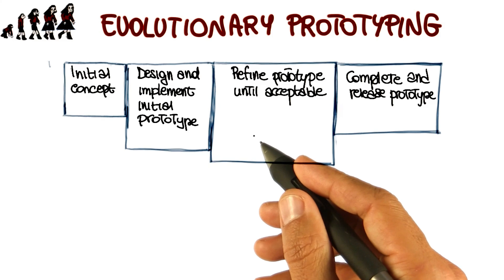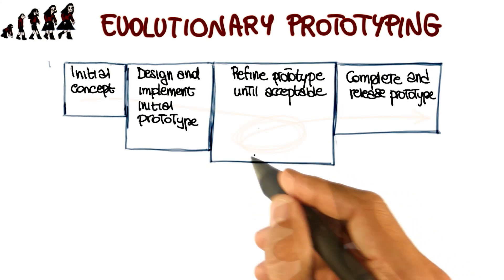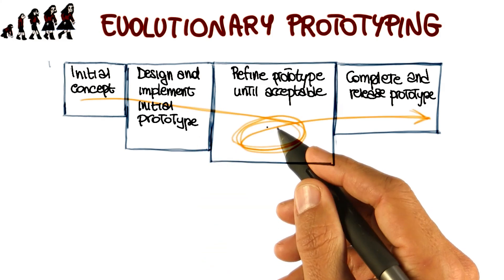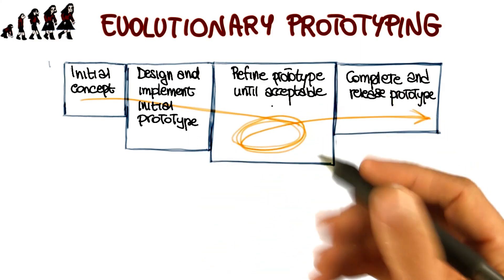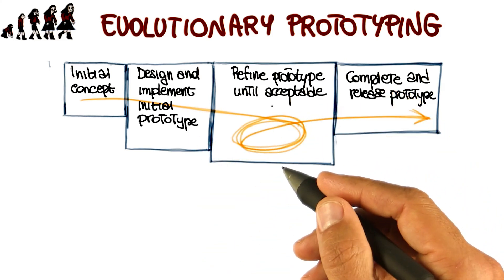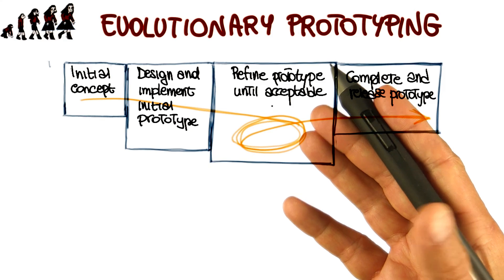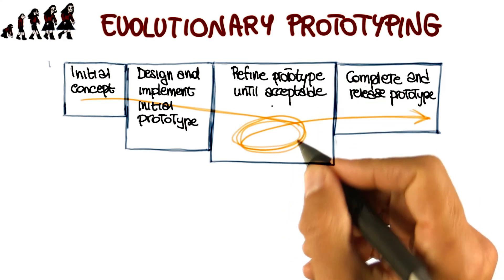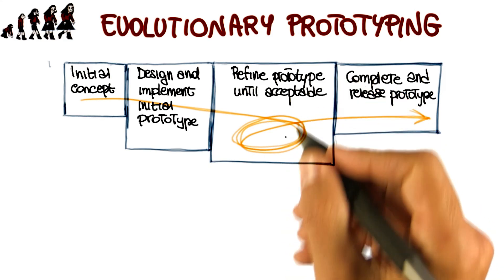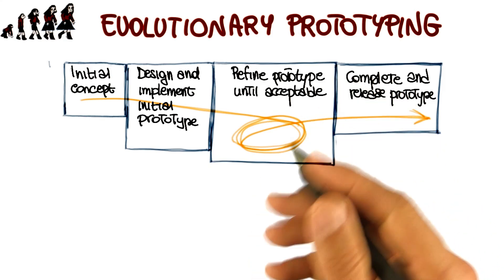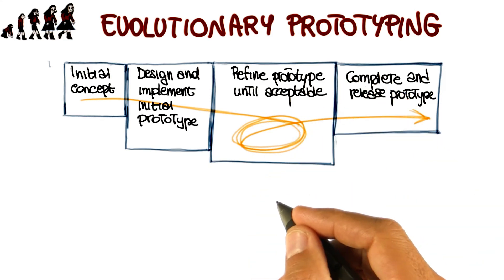When developing a system using evolutionary prototyping, the system is continually refined and rebuilt. So it is an ideal process when not all requirements are well understood, which is a very common situation.